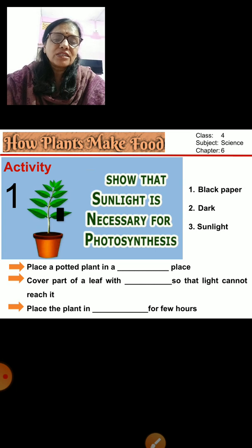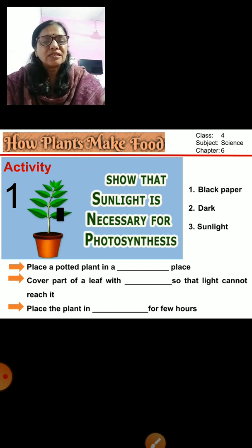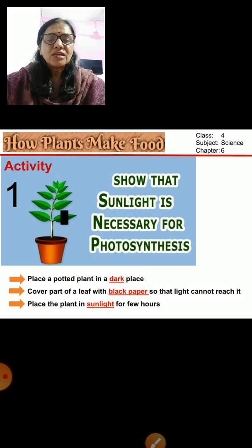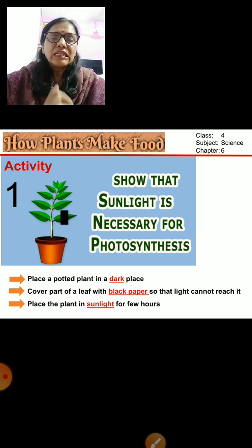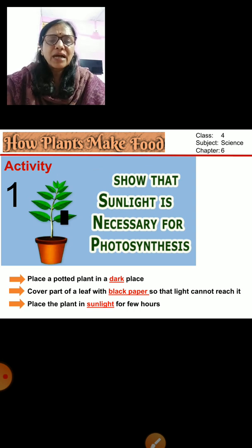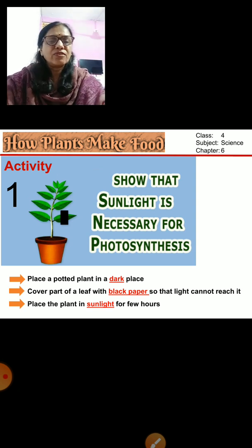Place the plant in sunlight for a few hours. A part of the leaf is covered, the potted plant is first kept in the dark with the leaf covered, and then it is kept in sunlight for a few hours.